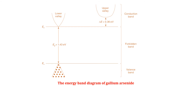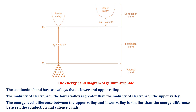The conduction band has two valleys: a lower valley and an upper valley. The mobility of electrons in the lower valley is greater than the mobility of electrons in the upper valley. The energy level difference between the upper and lower valleys is smaller than the energy difference between the conduction and valence bands. When the applied voltage across the thin slice of n-type gallium arsenide is increased, the electrons move with greater velocity in step with the applied voltage, and the current increases linearly with the voltage.